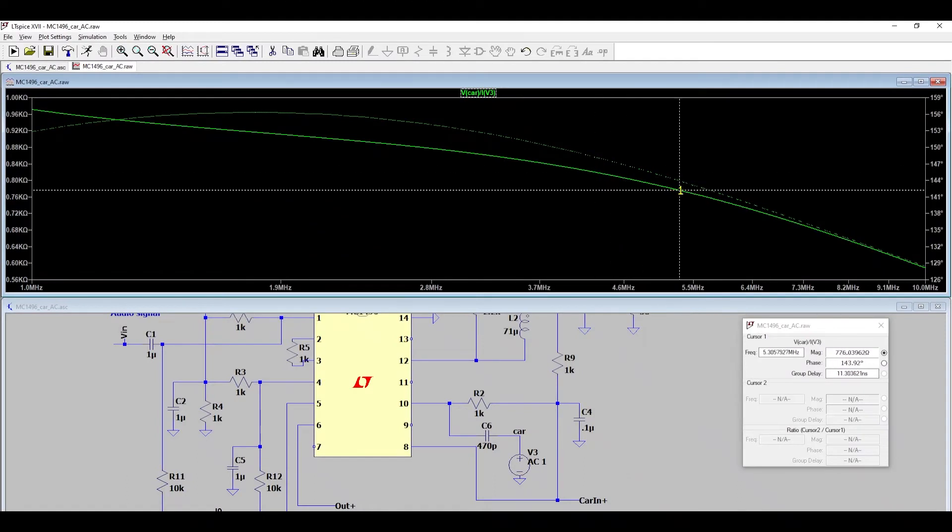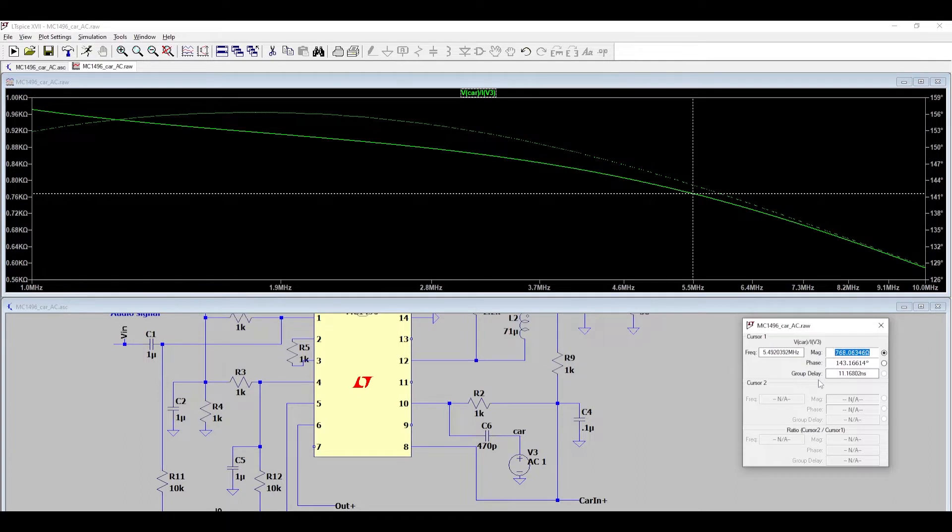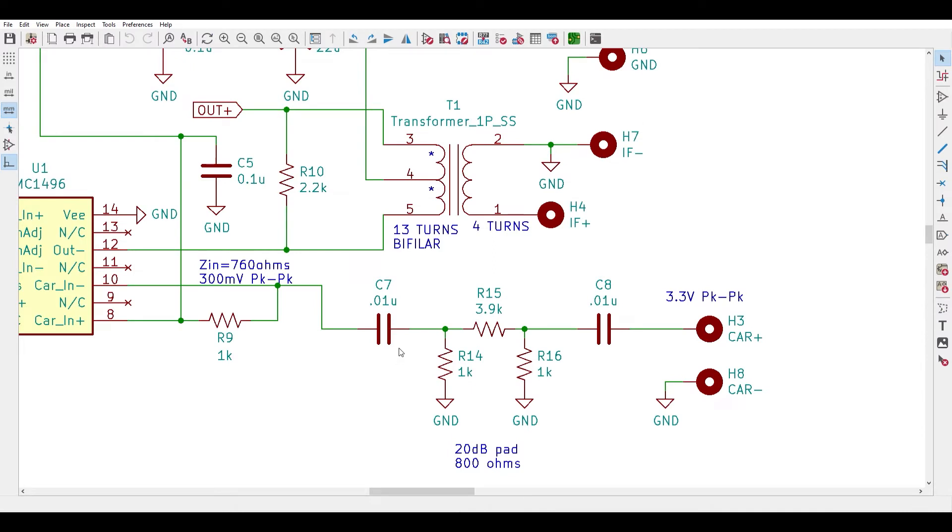Looking at the balance modulator, that circuit has an input impedance of around 760 ohms according to my simulation, so that should work fine without a buffer stage. But I still need to knock the voltage down to 300 to 500 millivolts peak to peak before feeding it into the MC1496 circuit, and that's easily done by just inserting a pi network. Using an impedance of 800 ohms, it's straightforward to calculate the 1k and 3.9k values needed. I'll start with these and adjust as needed after I build it and test it.